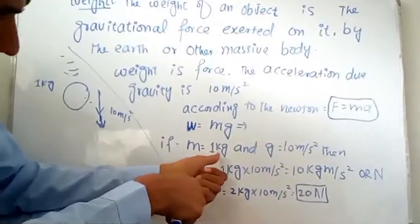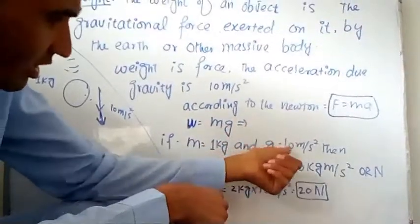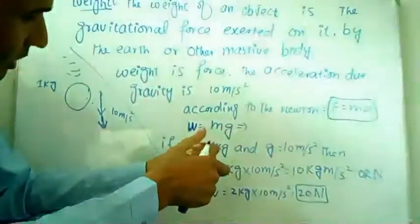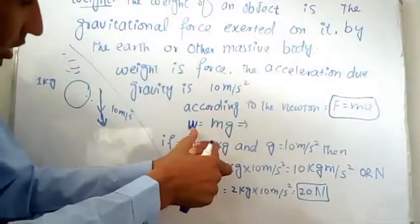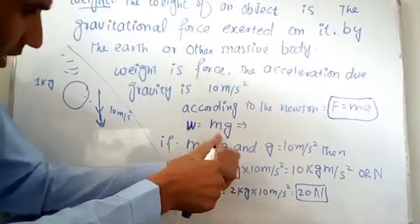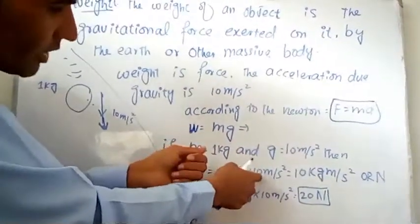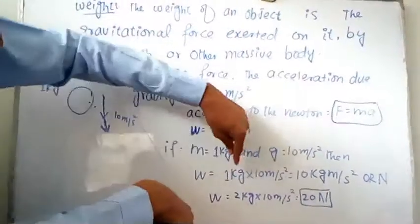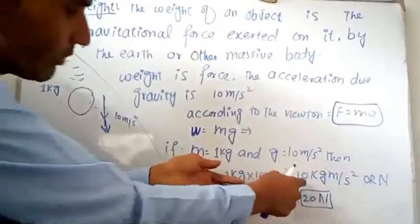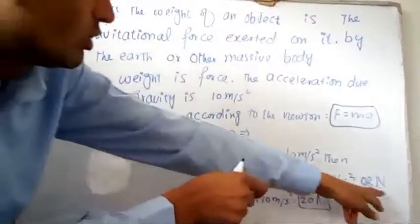For example, if the mass of the object is 1 kg and the gravitational acceleration is 10 meters per second squared, we put these values into the equation W equals mg: W equals 1 kg multiplied by 10 meters per second squared. When we multiply, the weight will be 10 kg·m/s² or 10 Newtons.